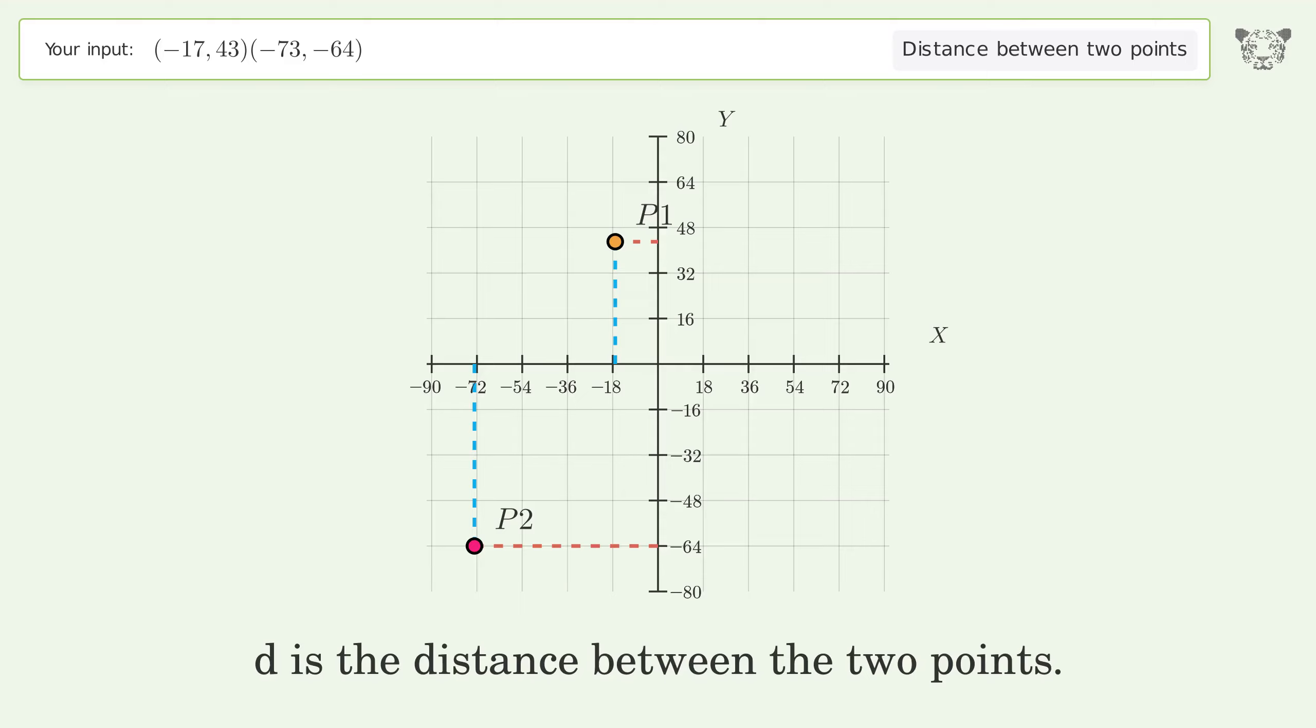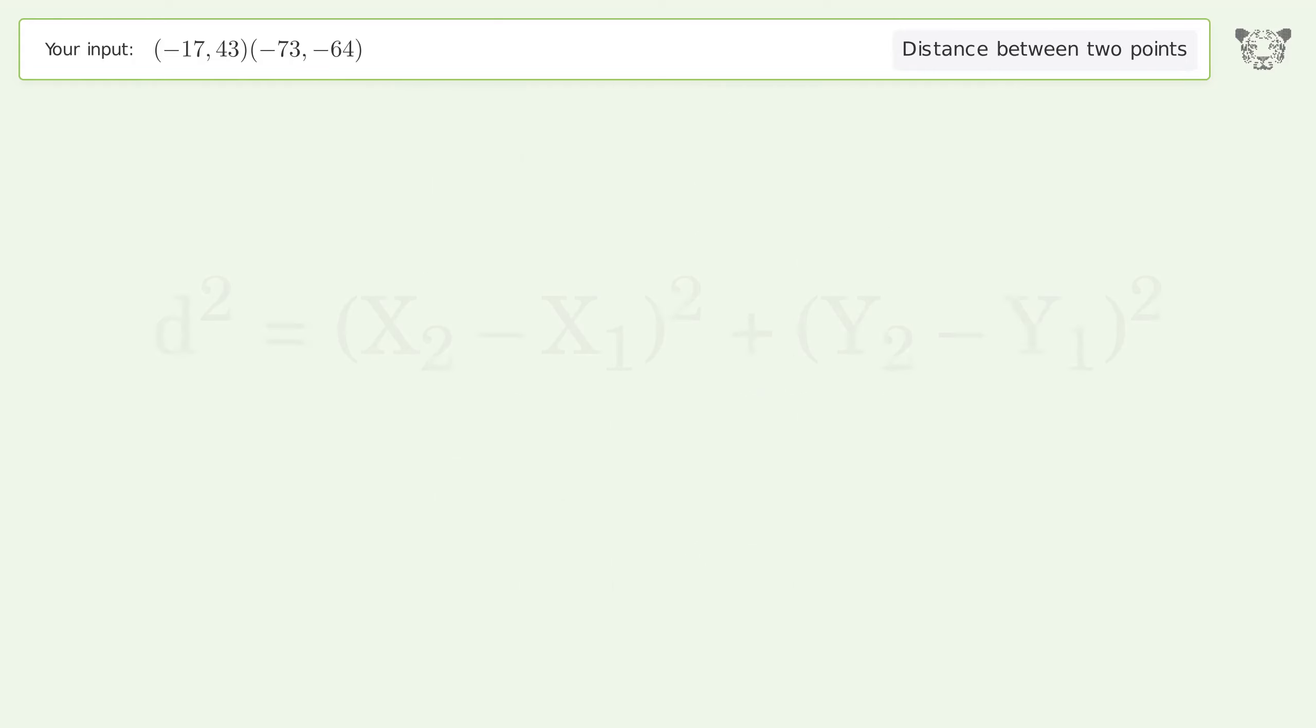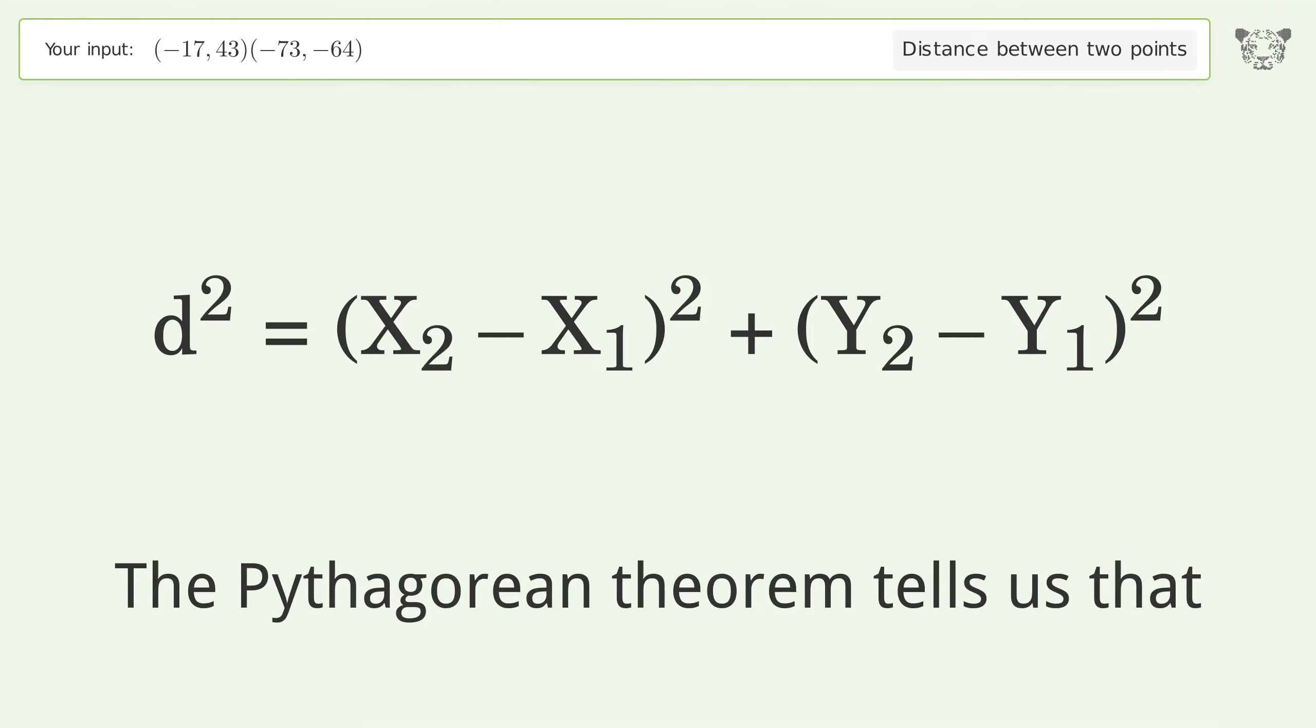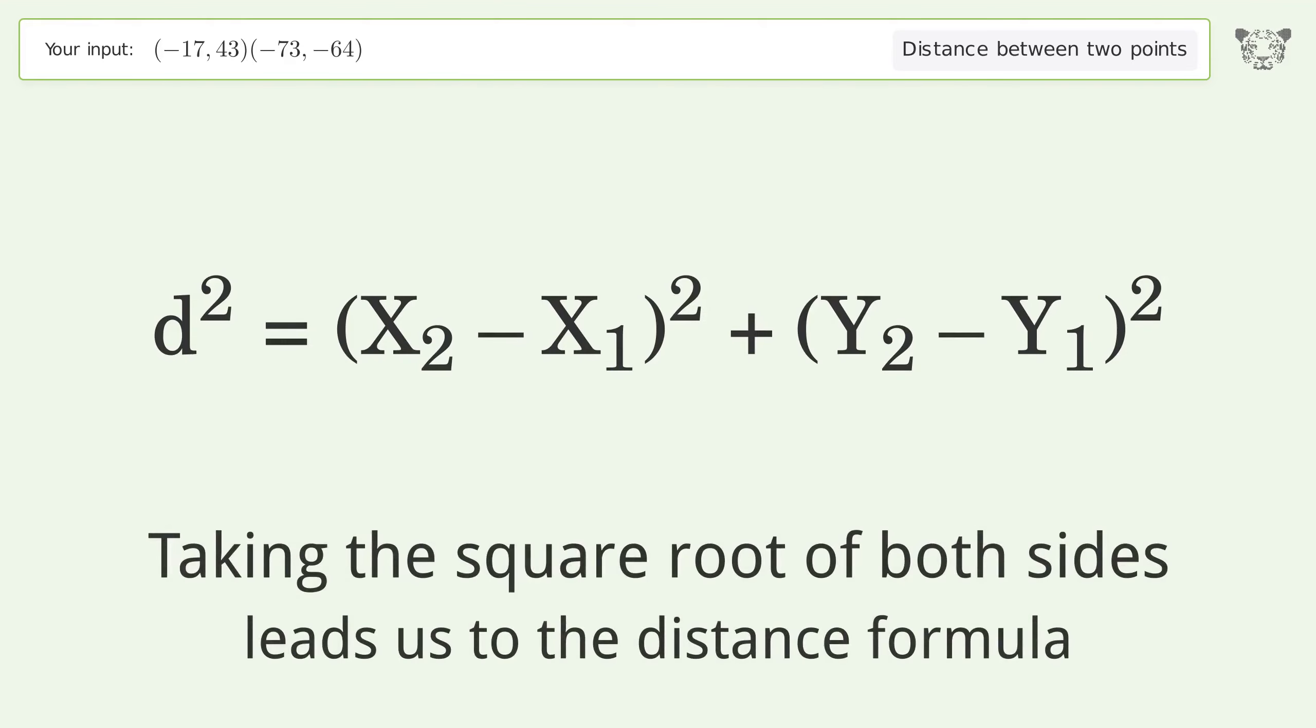d is the distance between the two points. The Pythagorean theorem tells us that taking the square root of both sides leads us to the distance formula.